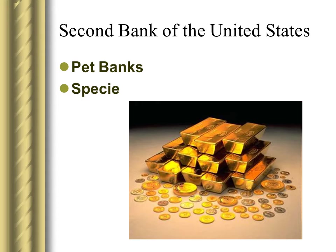Congress still wants the bank, so Andrew Jackson takes all the government money out of the Bank of the United States and puts it in banks controlled by the individual states — we call them pet banks. This essentially bankrupted the Bank of the United States. On top of that, Andrew Jackson says he wants all payments to the government to be made in specie, or gold. Rather than using paper money, every payment has to be made in actual gold. This destroys the American economy, but more importantly it destroys the Second Bank of the United States — which was the goal. The Bank of the United States dies, Andrew Jackson kills it, and he is super, super excited.